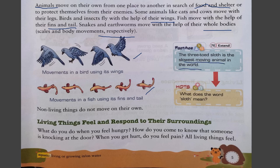The three-toed sloth is the slowest moving animal in the world. Non-living things do not move on their own. Next property: living things feel and respond to their surroundings. What do you do when you feel hungry? How do you know someone is knocking at the door? When you get hurt, do you feel pain? All living things feel.